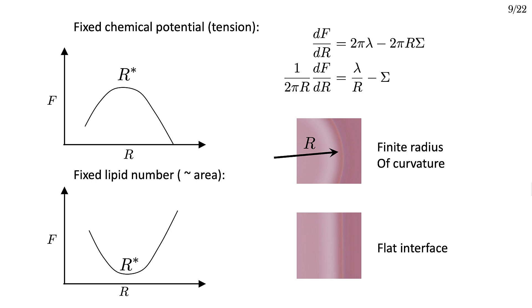So far I've been playing a bit fast and loose with the ensemble. On the previous slide I assumed that the tension was fixed rather than the number of lipids, and this gives rise to an unstable diaphragm or pore. If we consider a segment of the interface and calculate the force per unit length, the force due to the tension is constant, i.e., given by the membrane tension, and the force due to the line tension scales as 1 over r.